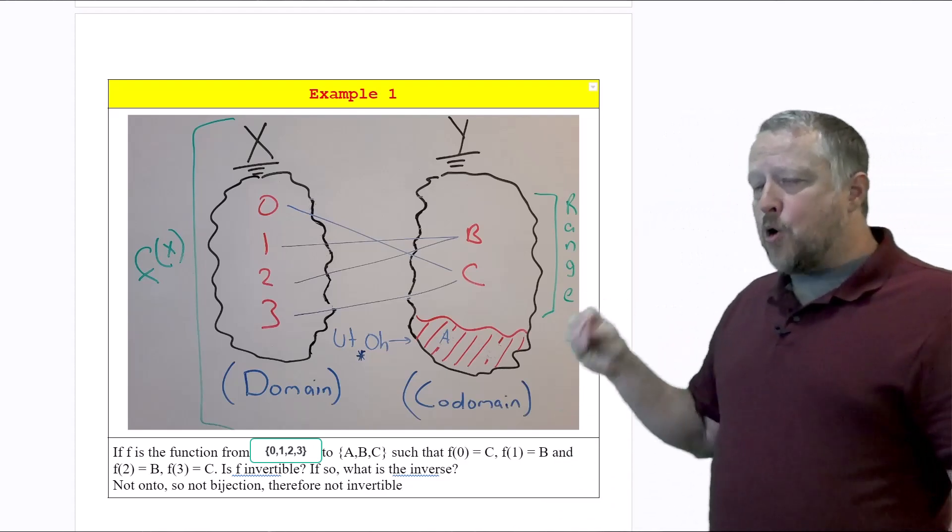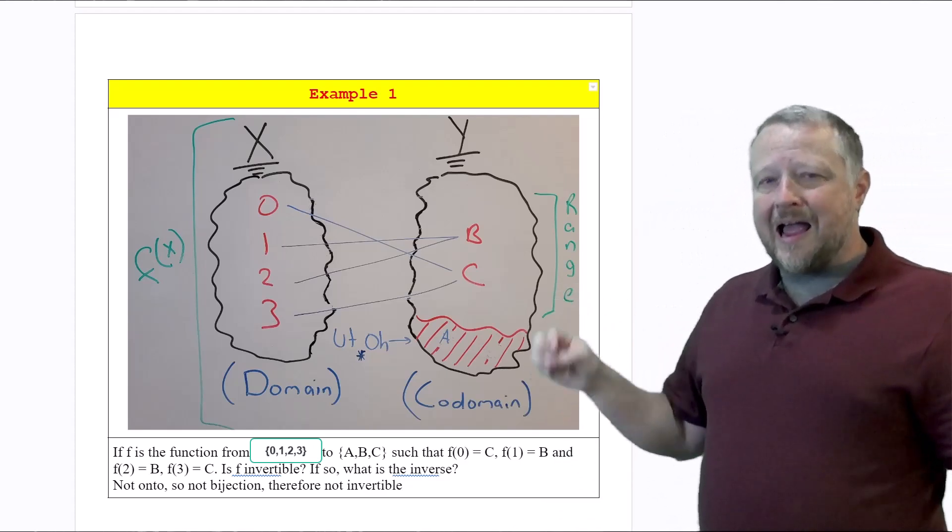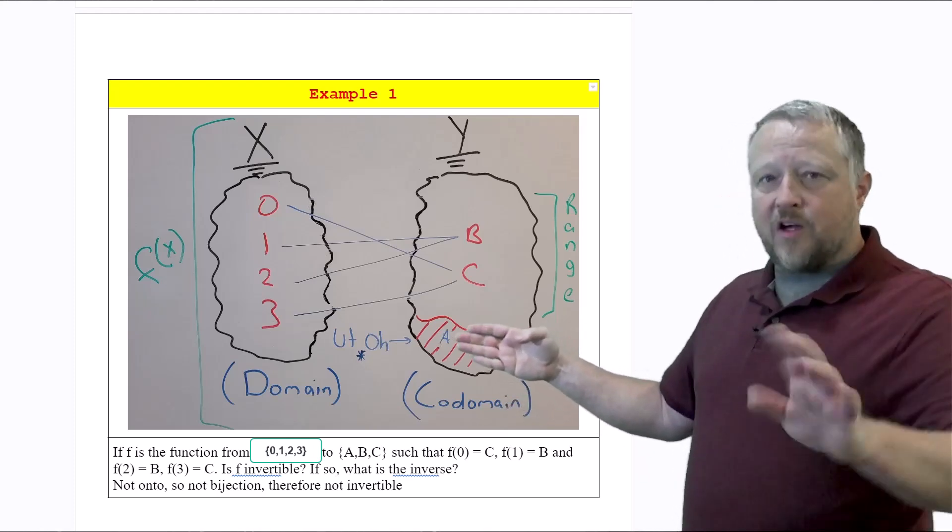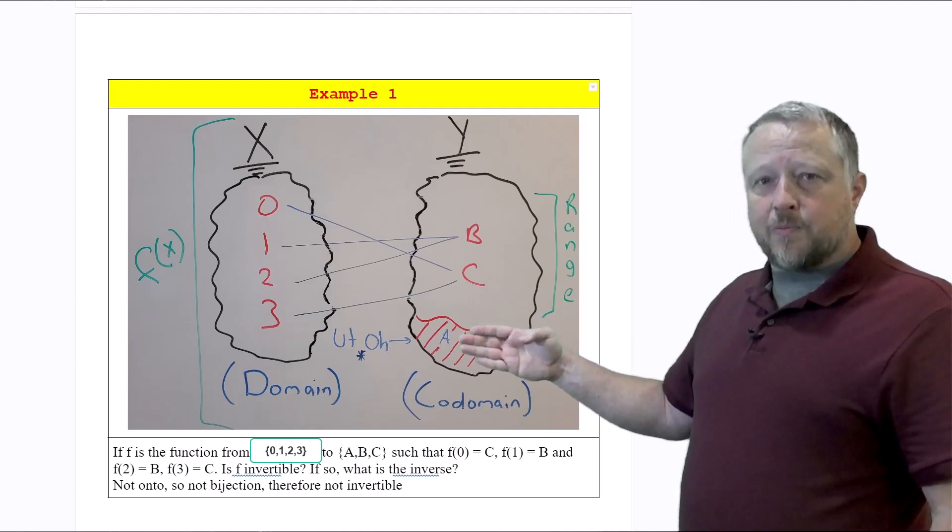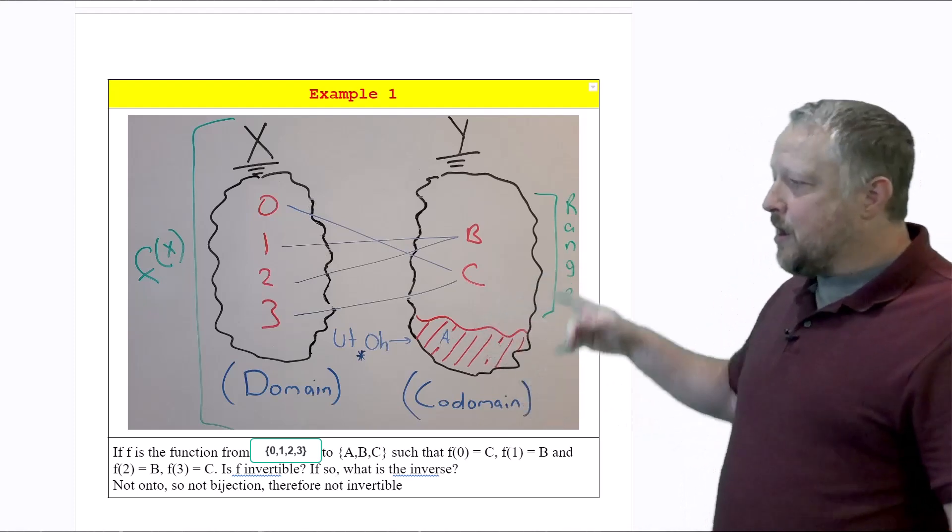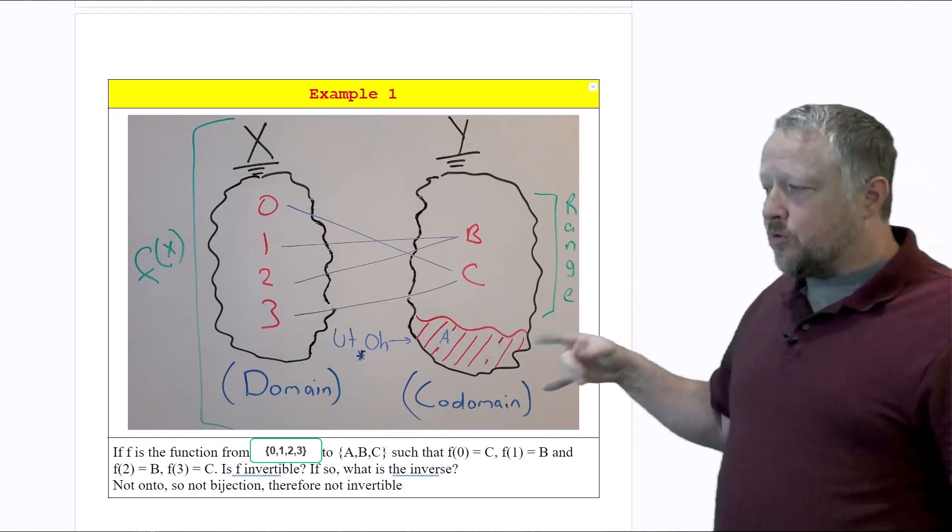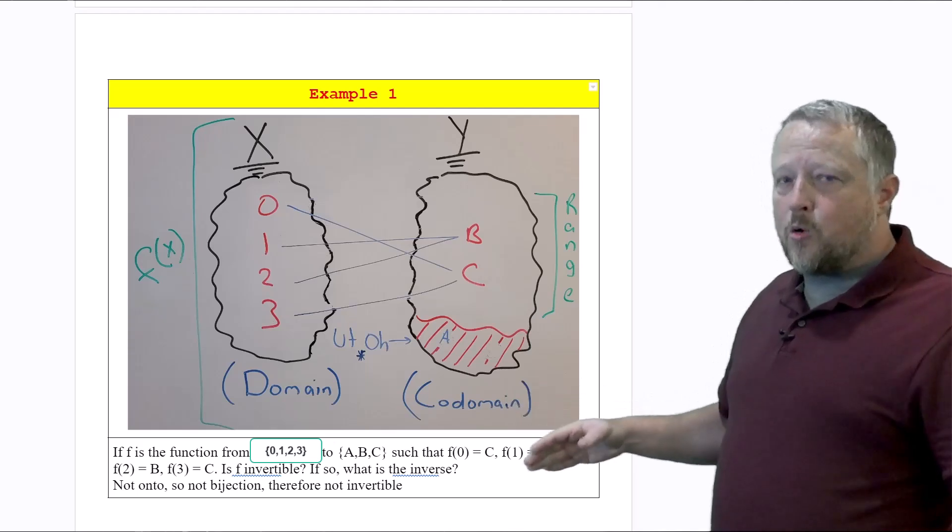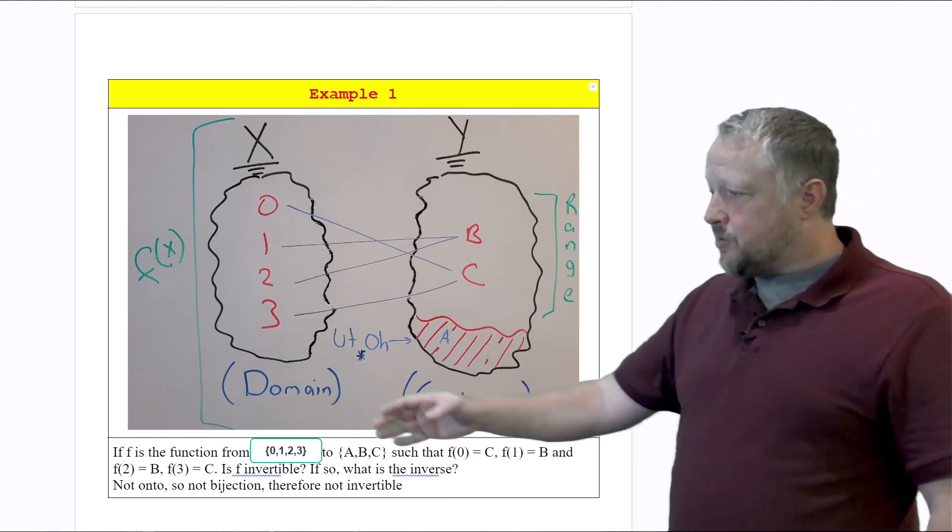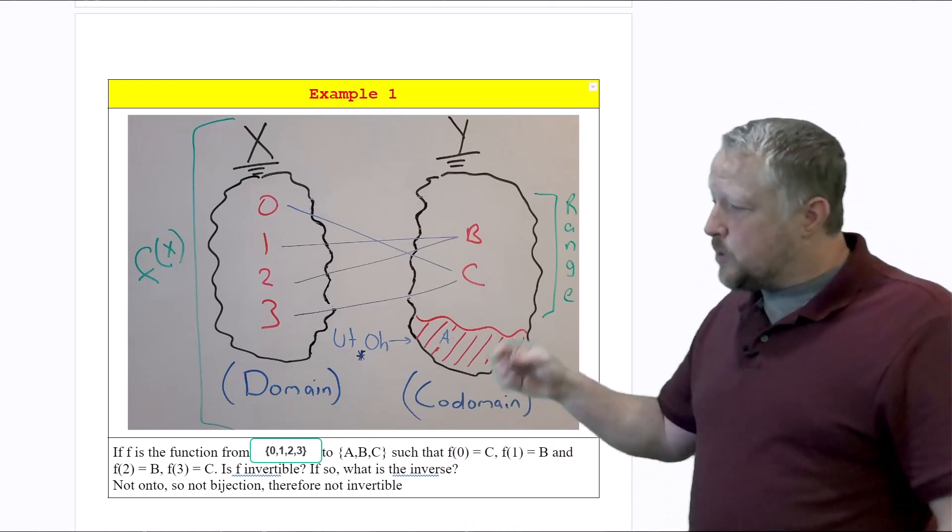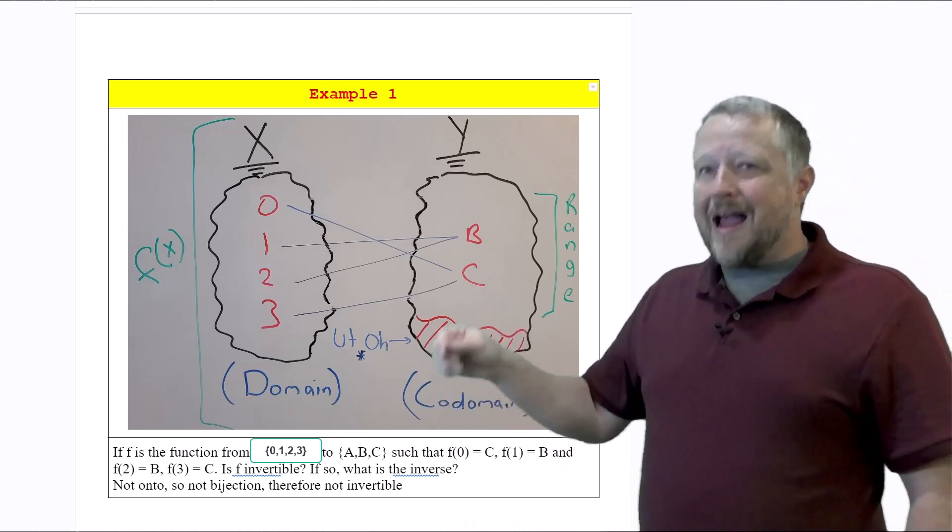Remember it needs to be both one-to-one and onto. Now I can knock that right off the bat. This is a problem. We should not have anything that we can't reach in the codomain. So that means the range is going to be smaller than the overall codomain. That's a stop right there. So we know that's not going to be a bijection because it's not onto, so therefore it's not invertible because invertible means both onto and one-to-one.